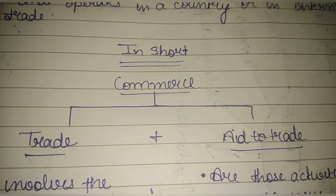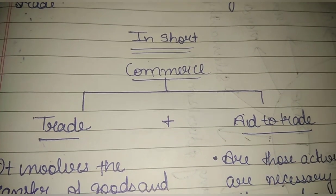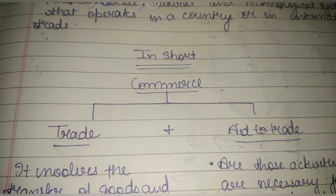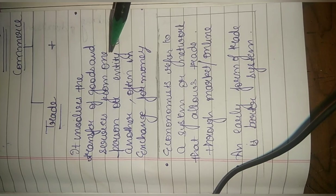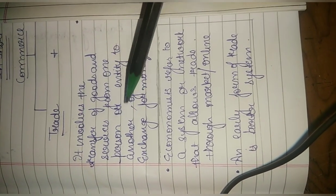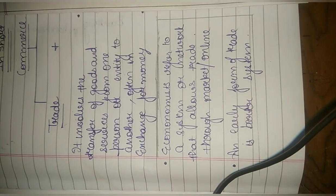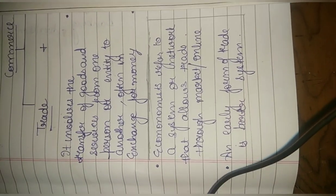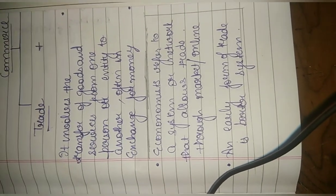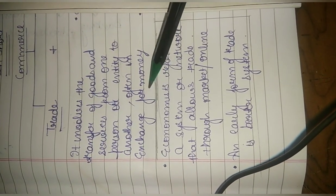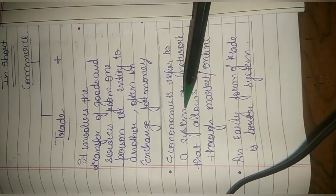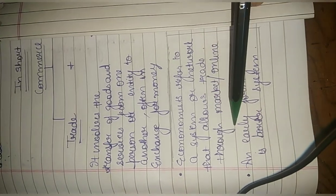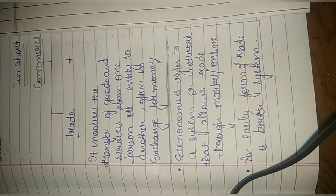In short, commerce is the sum total of trade and aid to trade. First of all, trade: it involves the transfer of goods and services from one person or entity — entity is the business unit in which all transactions occur — to another, often in exchange for money. Economists refer to a system or network that allows trade to occur through market or online means.